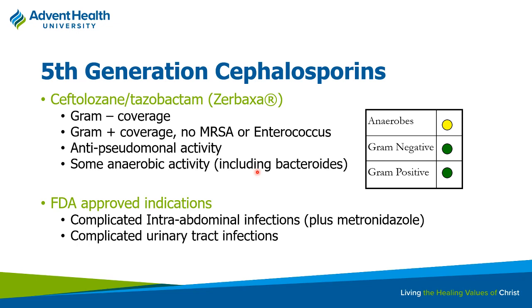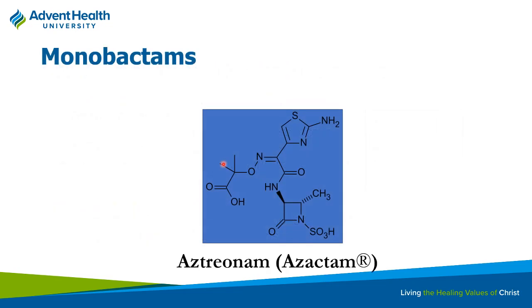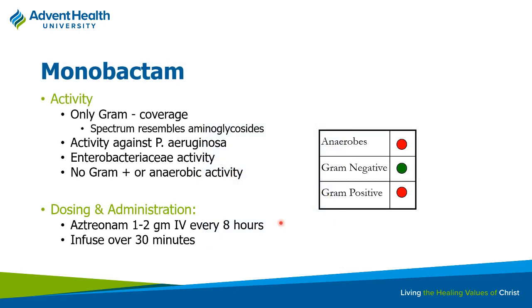Aztreonam is in its own category — the monobactam. You can still see the beta-lactam ring housed there. It only covers gram-negative bugs — no gram-positives, no anaerobic coverage — though it does cover Pseudomonas. It was used for a long time because people said there's zero cross-reactivity in terms of allergy between penicillins or cephalosporins and this monobactam. That was kind of its marketing push — if you have a patient with a penicillin allergy, you can use this no problem. However, it's so narrow in coverage that it's not used very frequently. It would be good if a bug is resistant to something else and still susceptible to aztreonam.